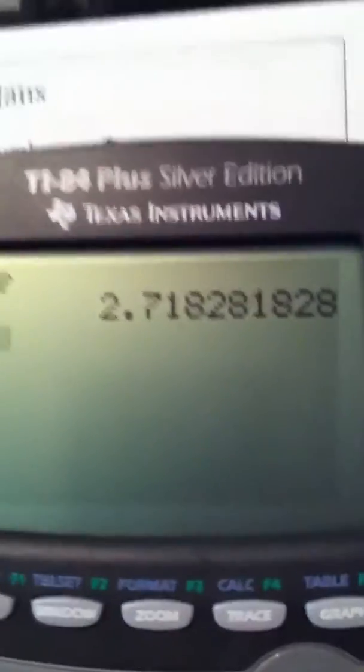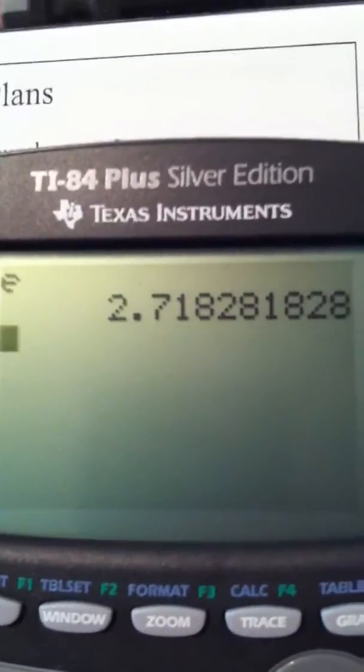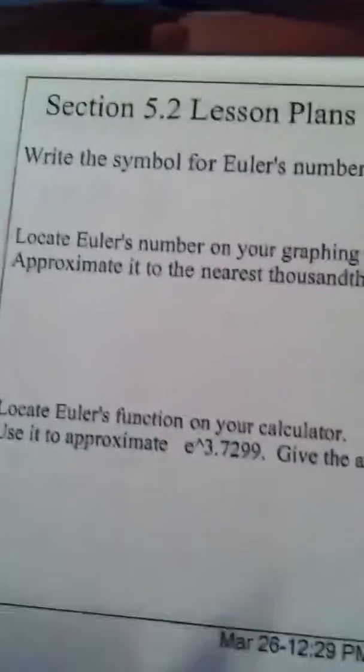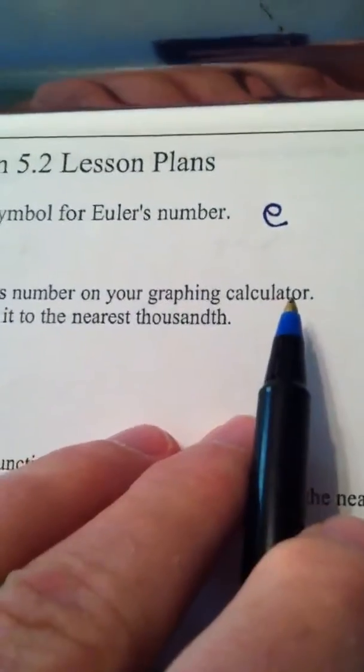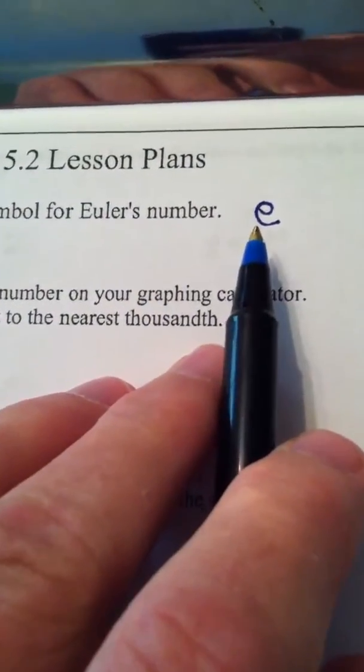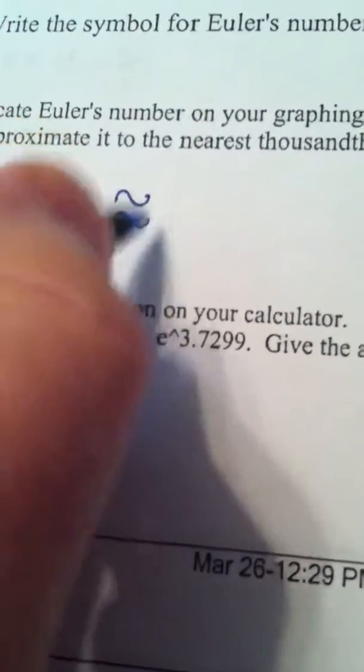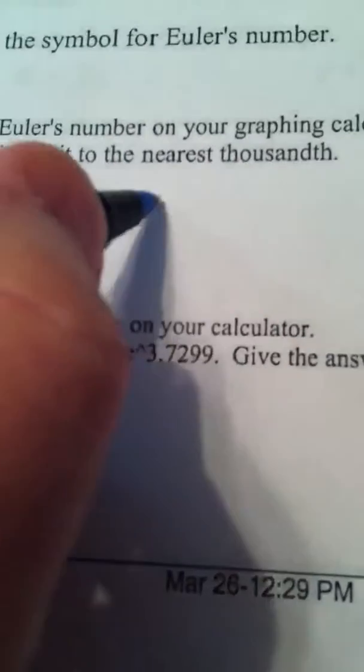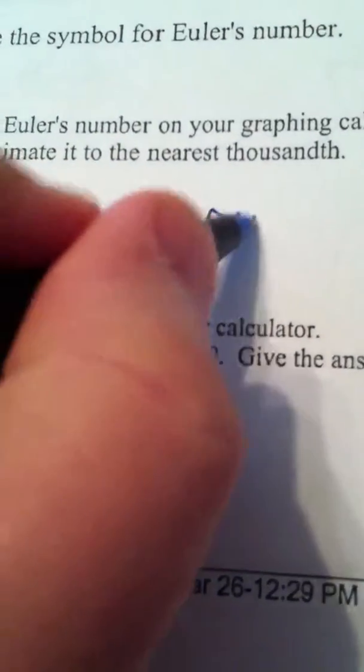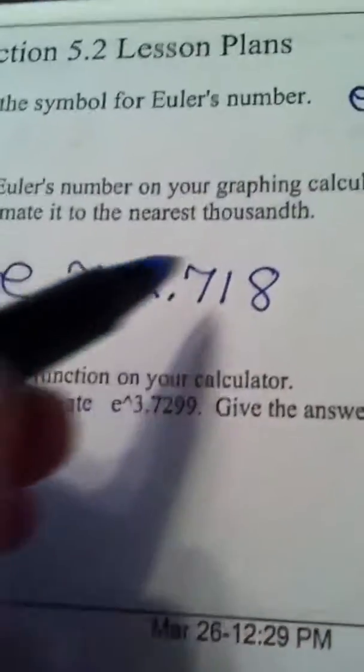and Euler's number appears on my calculator. If I hit the enter button, it will actually show me the approximation to Euler's number. So, to answer this question, located on the graphing calculator, Euler's number is above the division key. And to the nearest thousandth, e is approximately 2.718.